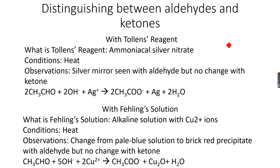There are two different tests to determine whether a carbonyl compound is an aldehyde or a ketone. One is a test with Tollens reagent and the other is a test with Fehling's solution. You can carry out any one of these tests and you'll get the result. Let's talk about the Tollens test first.